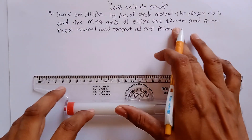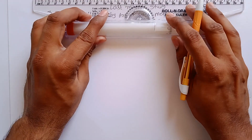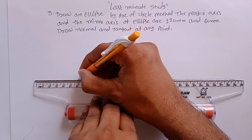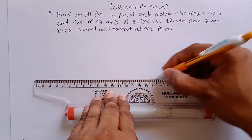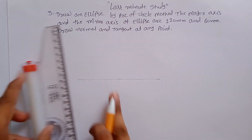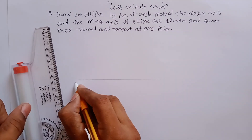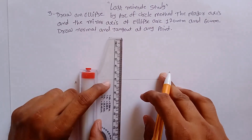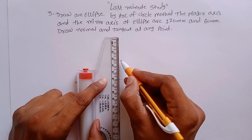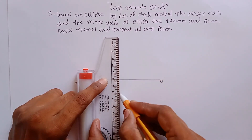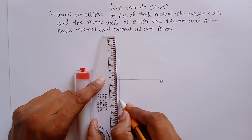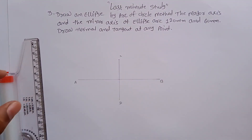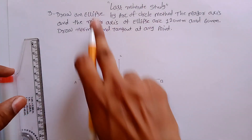First of all we have to construct the major axis and minor axis. The major axis is 120 mm. Let's say this point is A and this point is B. From the center, you have to construct 60 mm — 30 from this side and 30 from this side. This point is C and this point is D.